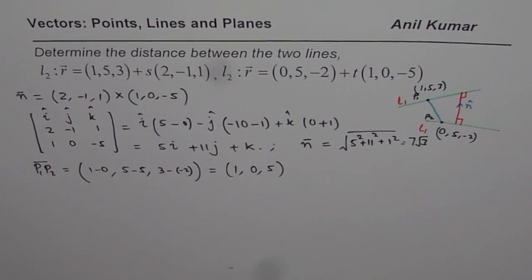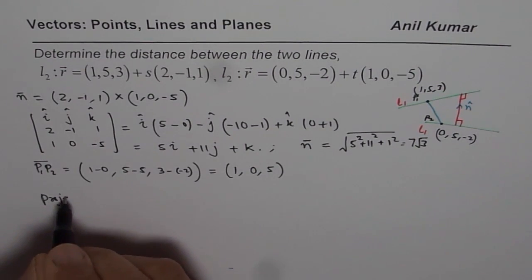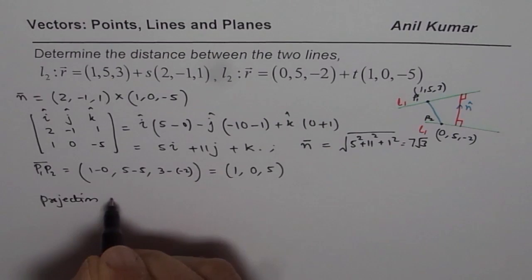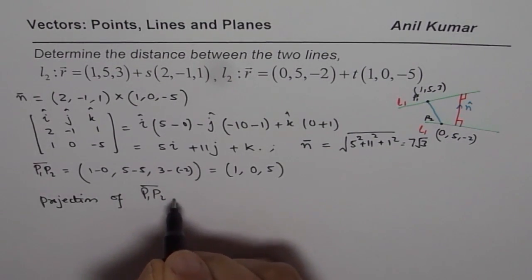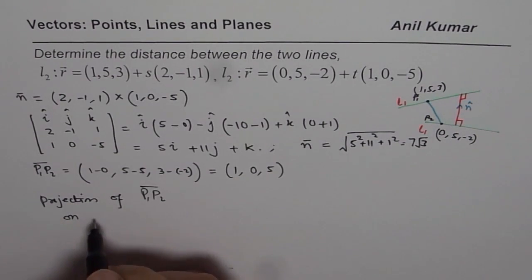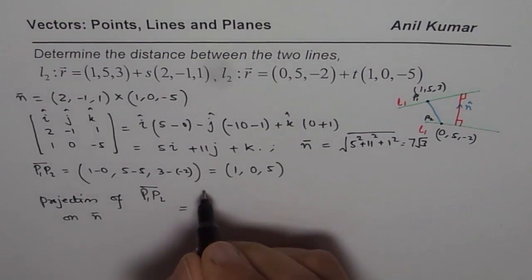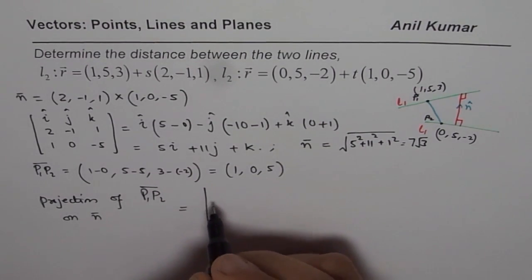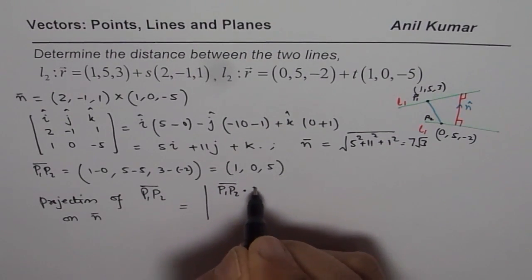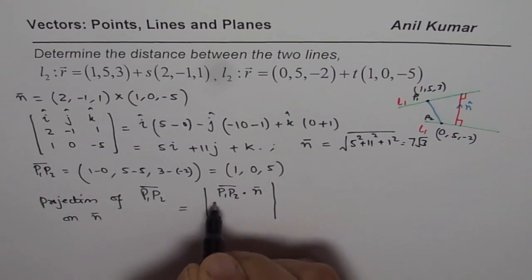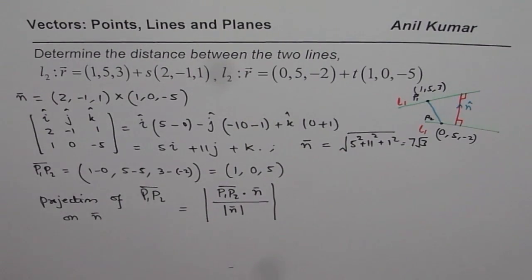Now, the distance between these two will be projection of P₁P₂ on normal n. And that could be found by dot product. So, that should be P₁P₂ · n over magnitude of n. So, we divide by that.